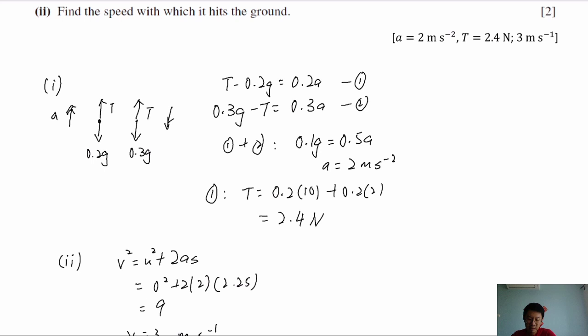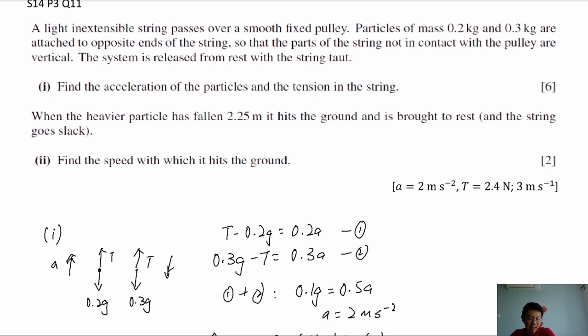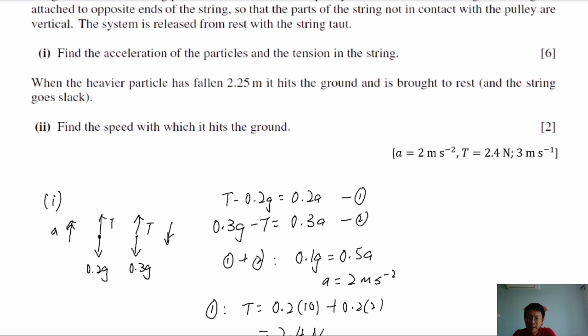Second question: we have a light inextensible string and a pulley — a typical pulley question with two particles, 0.2 kg and 0.3 kg. They are attached to opposite ends of the string so the parts not in contact with the pulley are vertical. The system is released from rest with the string taut. First, find the acceleration of the particles and the tension in the string.